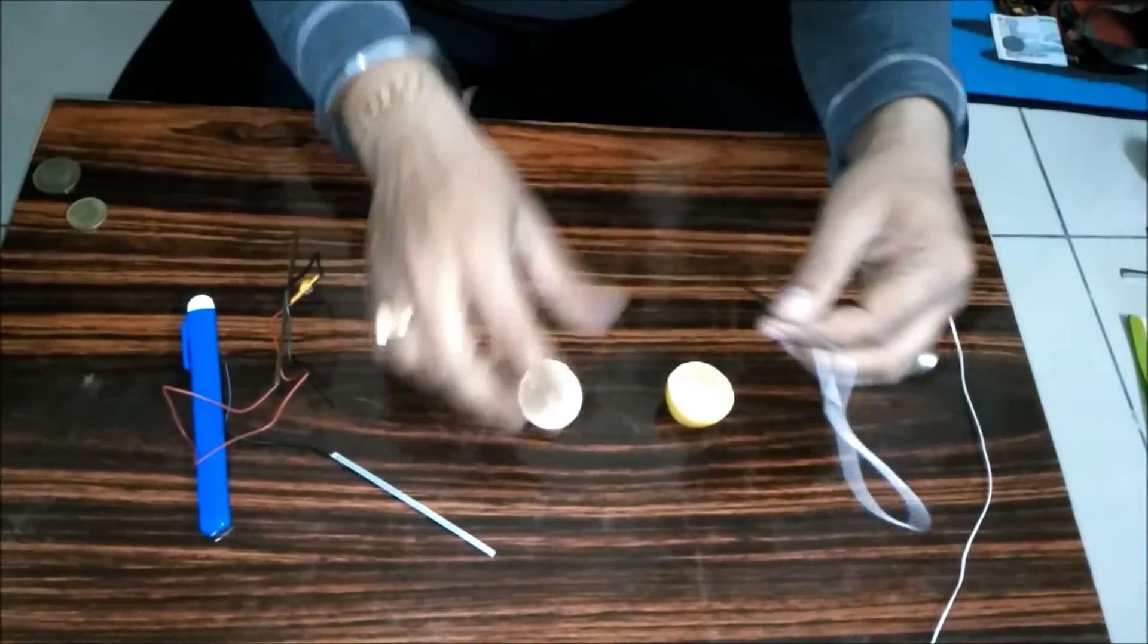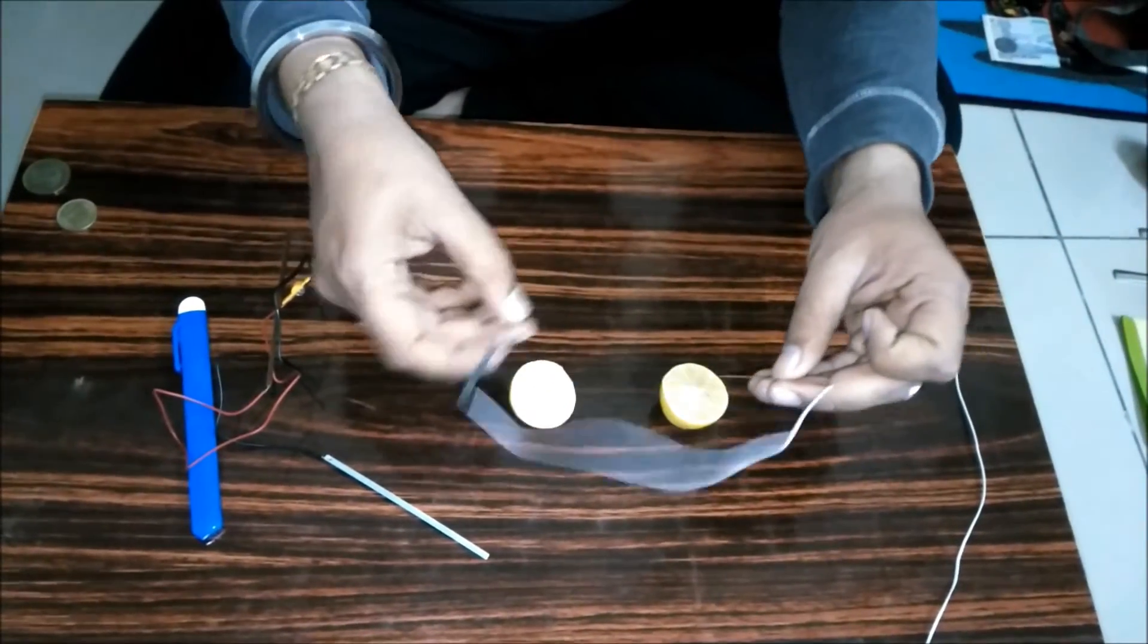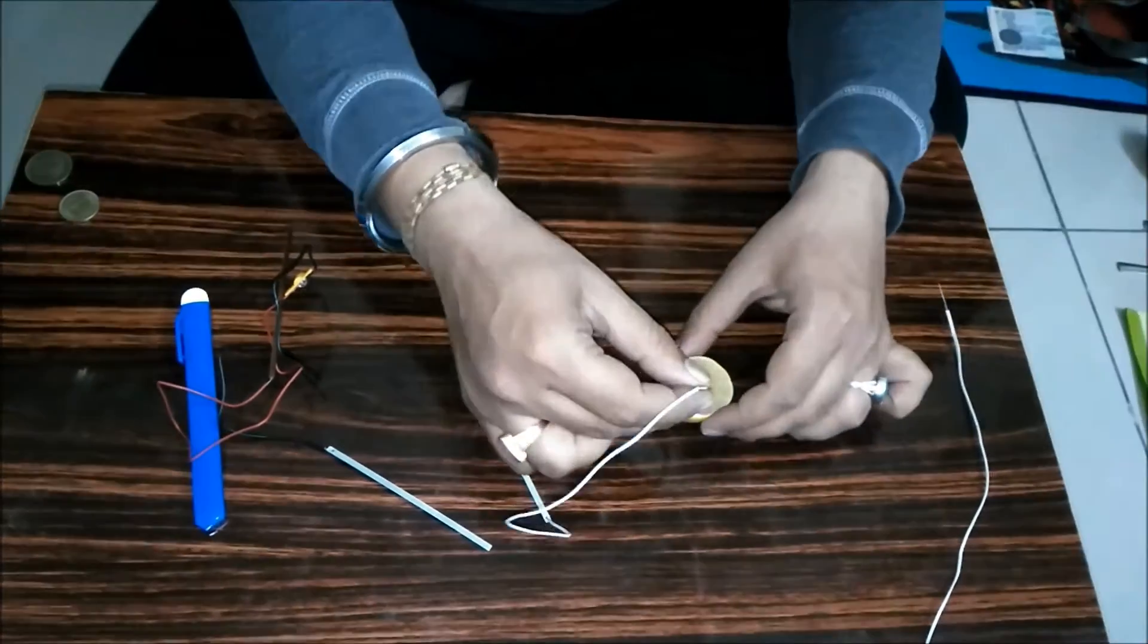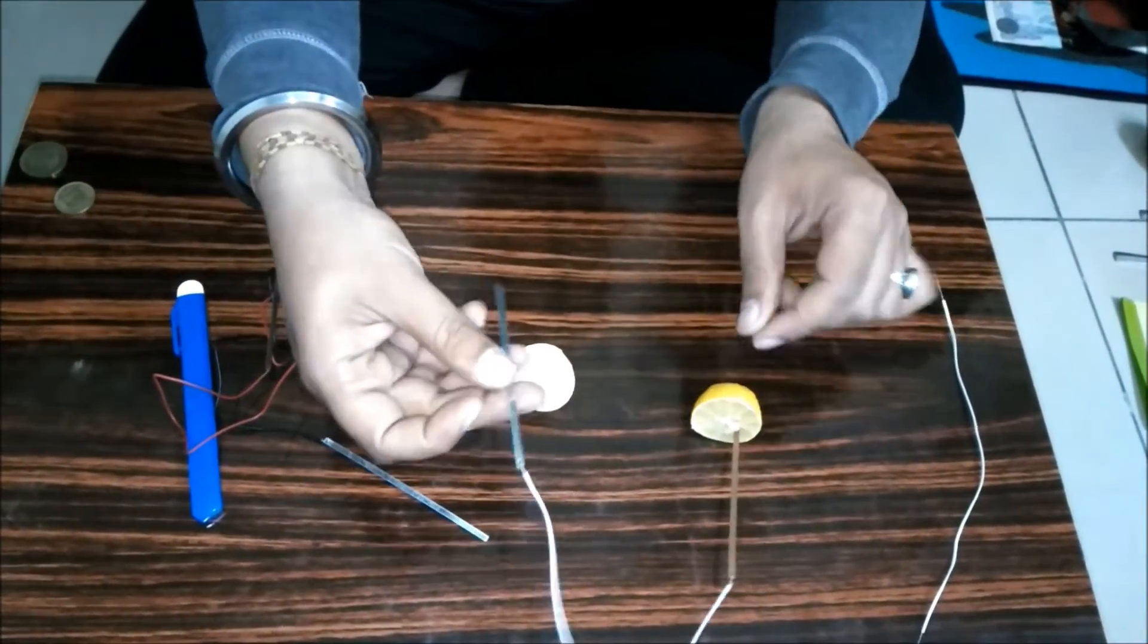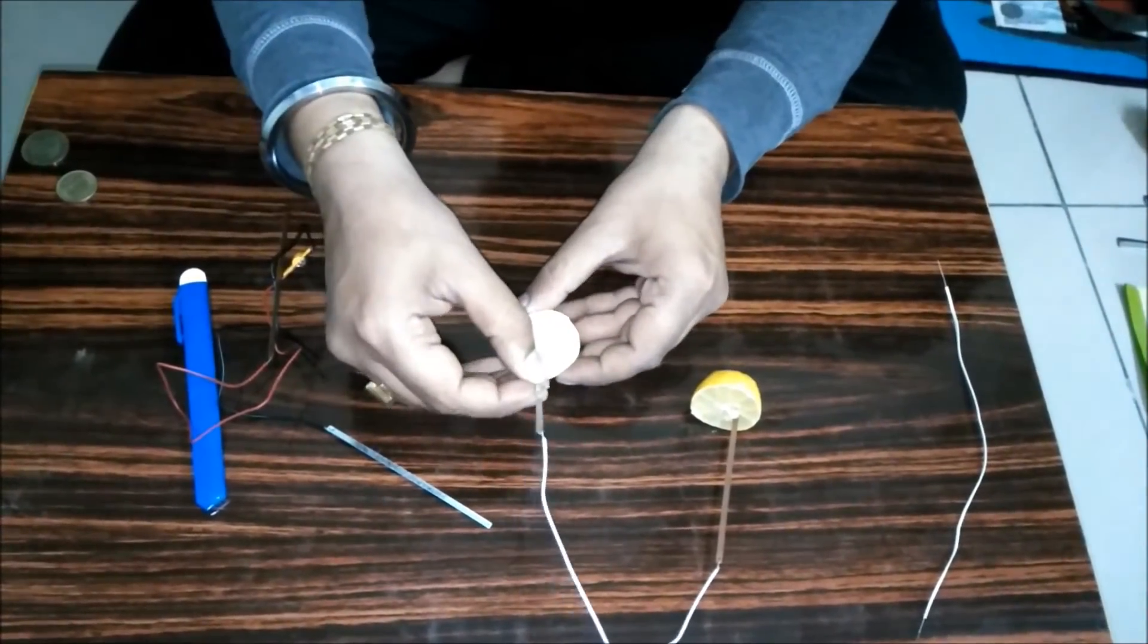Now we'll take this connection and insert one copper strip in this part of a lemon and one zinc strip in this part of a lemon.